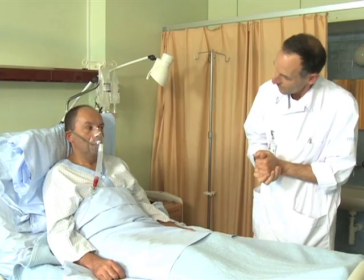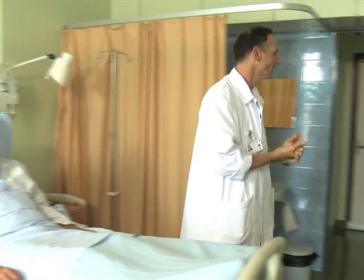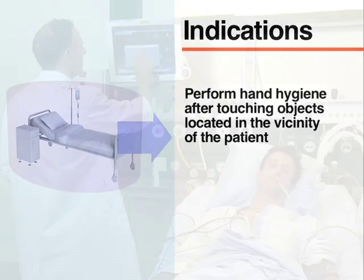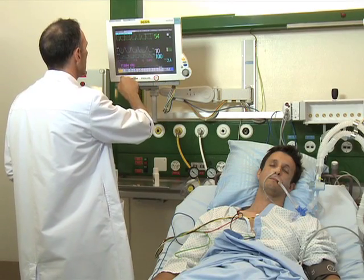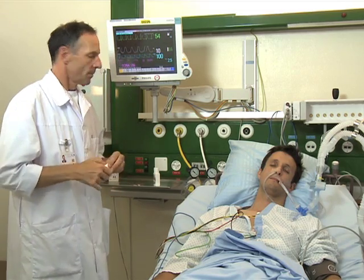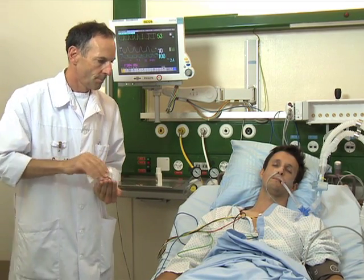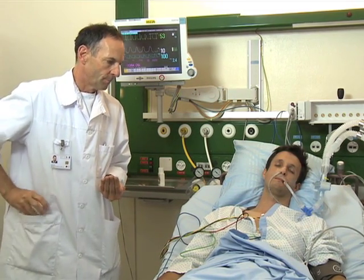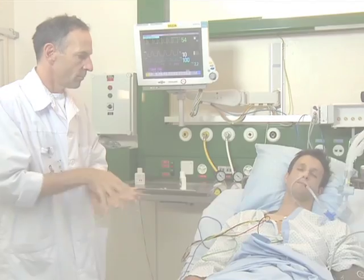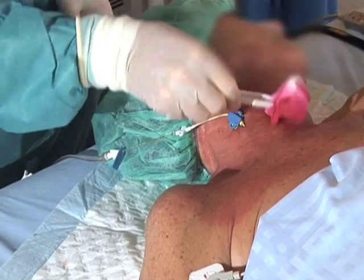You should also perform hand hygiene just after touching a patient and before touching any object located outside the patient zone, to limit the risk of germ dissemination to the healthcare environment. Even if you did not touch the patient, perform hand hygiene after touching objects located in the vicinity of the patient — for example, after touching a monitor, bedside table, or bed rail — since these may also be contaminated by the patient's microbial flora.